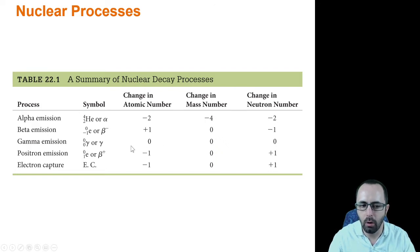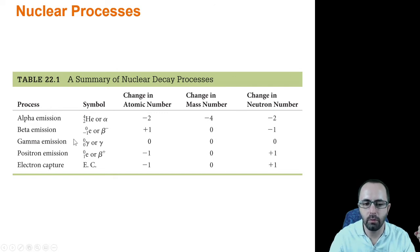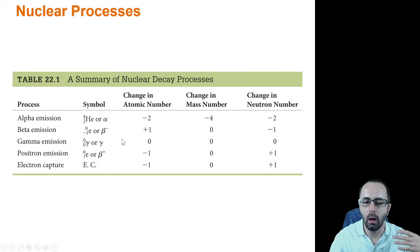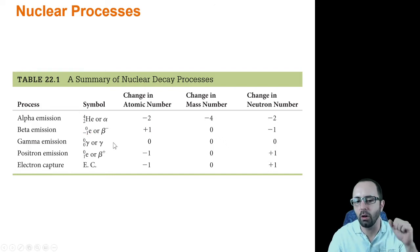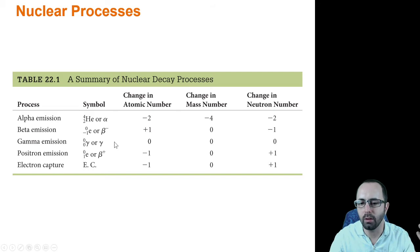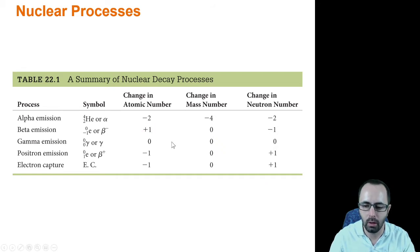Another common type is beta emission, which involves the emission of a beta particle — a high-energy, fast-moving electron. It's often represented as beta or beta-minus, or as an electron with zero mass and a charge of negative one. The result of losing a beta particle is an increase in the atomic number by one, because the nucleus lost a negative charge. What happens is a neutron turns into a proton: we lose one neutron, gain one proton, and the mass does not change.